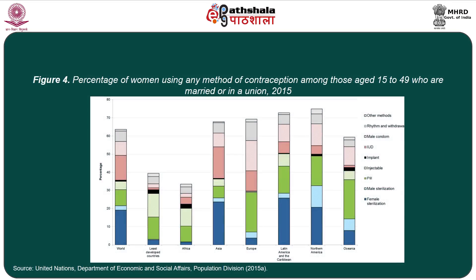Figure 3 gives the percentage of women using any method of contraception among those aged 15 to 49 who are married or in union as of 2015. The method mix regarding use of family planning varies from region to region. In some regions, female sterilization is the dominant method, particularly in Asia, Latin America, and the Caribbean, followed by Northern America. In Oceania, the contribution of female sterilization seems to be low, while spacing methods appear to be high.